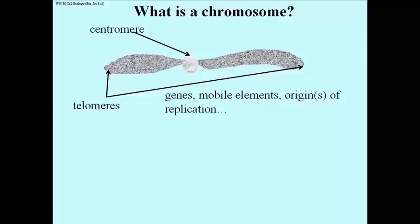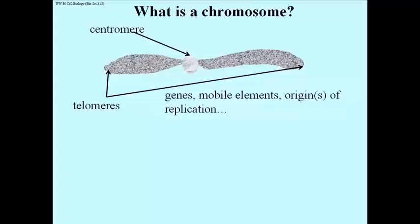Among the components of chromosomes are the sequences in the DNA. The sequences in DNA include genes, which we typically think of as sequences of DNA that code for proteins. You may also recall the term transposons, or mobile elements, which are scattered throughout the genome. In fact, in many higher organisms, mobile elements make up a goodly portion of the genome. You may also recognize origins of replication, sequences at which DNA begins to duplicate itself. So there are different kinds of genetic information within a chromosome.